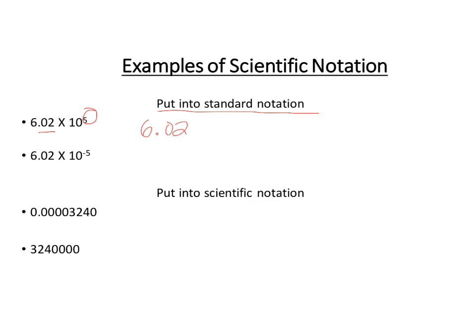And in these little spaces, you're just dropping zeros. So your number out of scientific notation is 602,000. So 602,000.